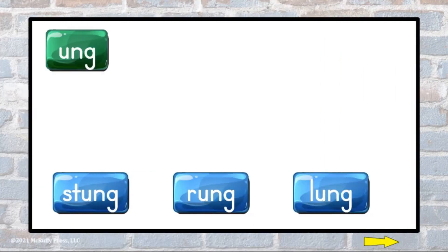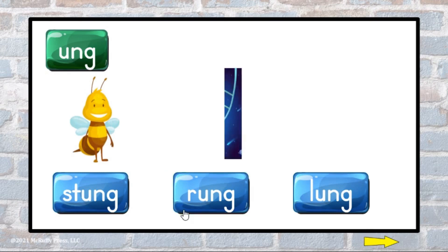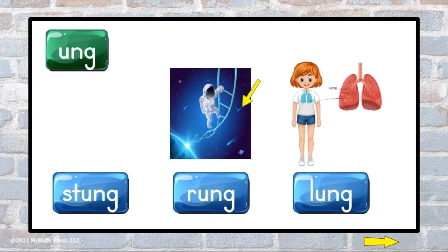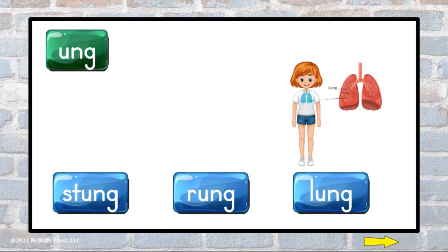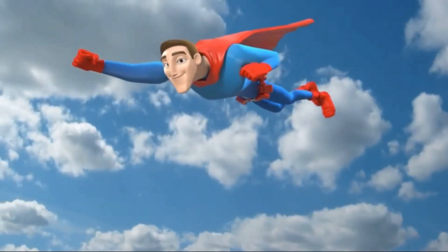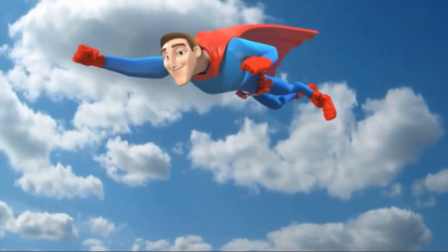The letter U added to the N-G blend says ung, ung. The U says a short sound. Stung, rung, lung.